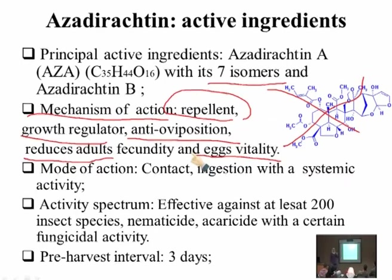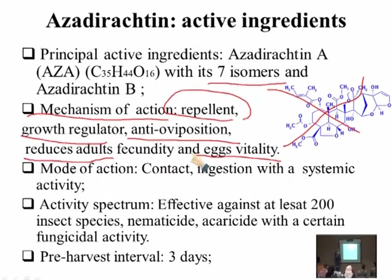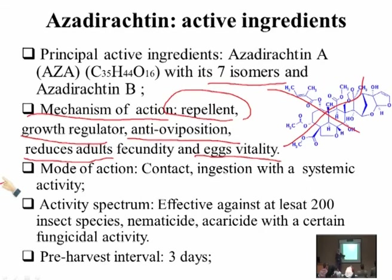The mode of action of azadirachtin includes: repellent — it repels insects so they don't feed on the plant; growth regulator — it inhibits molting or interferes with development and growth; anti-oviposition — it prevents egg-laying, so the insect doesn't feed and doesn't lay eggs on the plant.